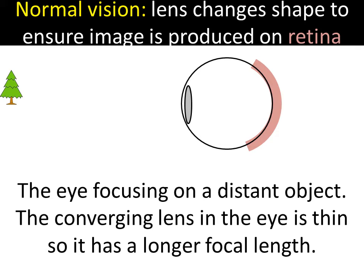At the front of your eye there is a lens just behind the pupil, and the job of that lens is to focus light coming from objects onto the retina, which is the pink shaded area on the back of the eye.